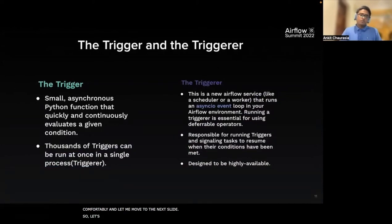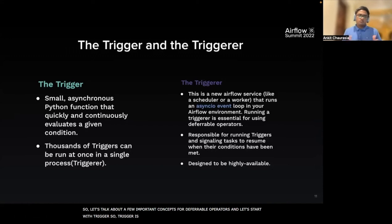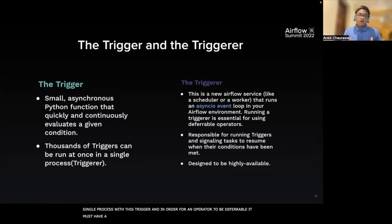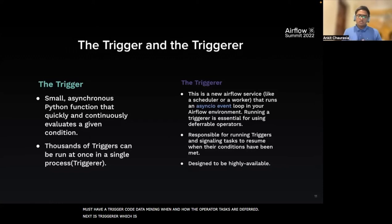Let's talk about a few important concepts for deferrable operators. First, a trigger is essentially a small piece of asynchronous Python code — a passing asynchronous function — which quickly and continuously evaluates a given condition. Thousands of triggers can be run at once in a single process, which is the triggerer. In order for an operator to be deferrable, it must have trigger code that determines when and how the operator tasks are deferred. The triggerer is a new service in Airflow — like the scheduler or a worker — that runs an async IO event loop in the Airflow environment.